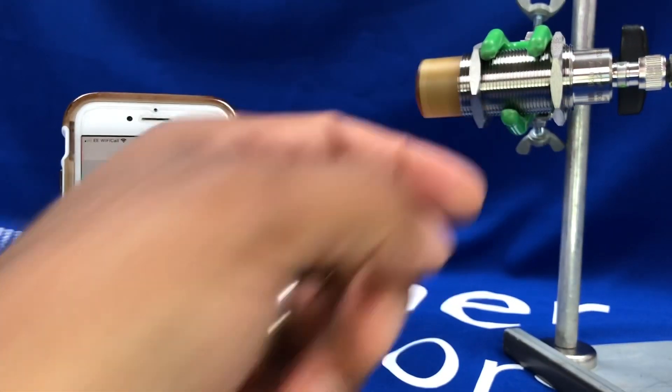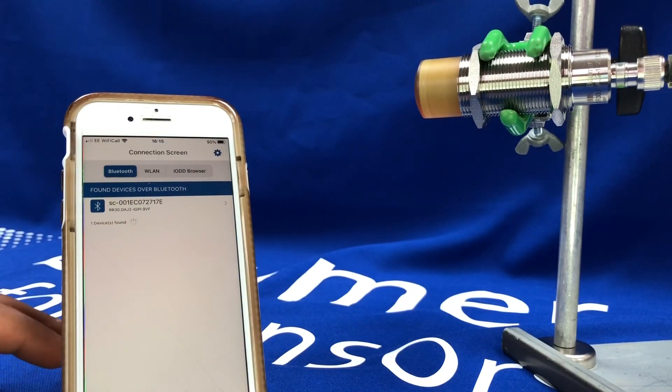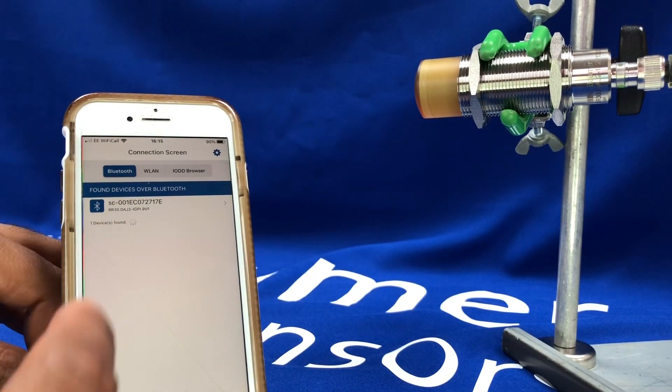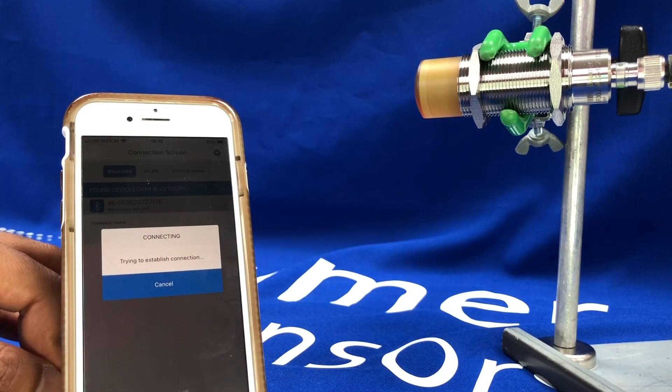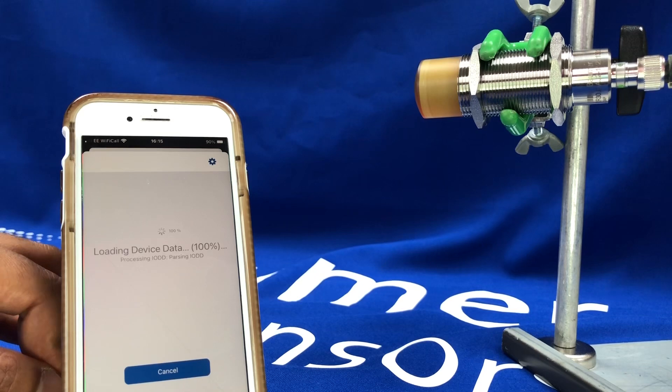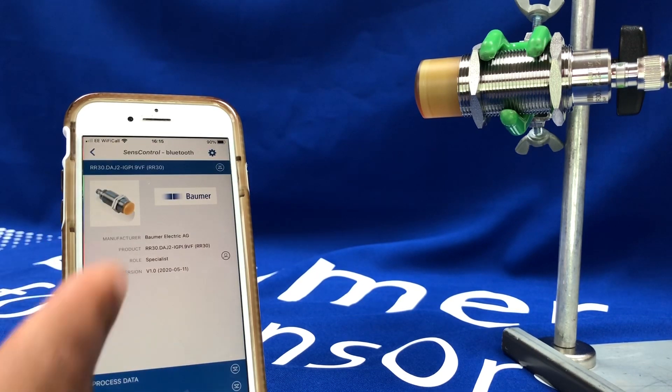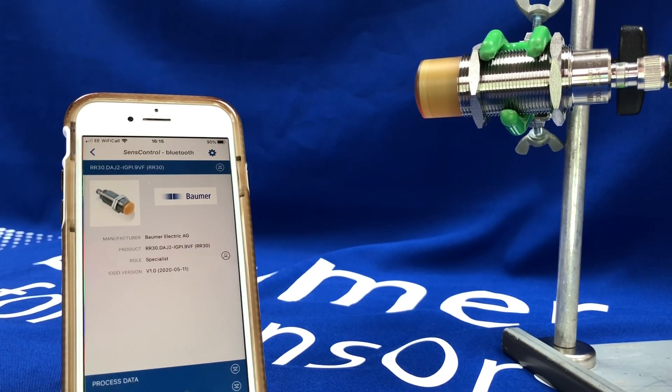I have the radar sensor now plugged into our wireless IO-Link master, so I can go into the app, select the master and the connected device. It will download the IO-DD file and show you the analog sensor that is connected, the radar analog sensor with IO-Link capabilities.